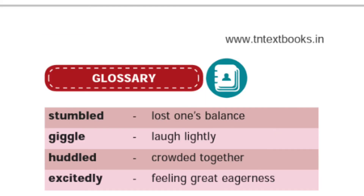Section 3 glossary, page number 35. 'Stumbled' — lost one's balance. 'Giggle' — laugh lightly. 'Huddled' — crowded together. 'Eagerly' — feeling great eagerness.